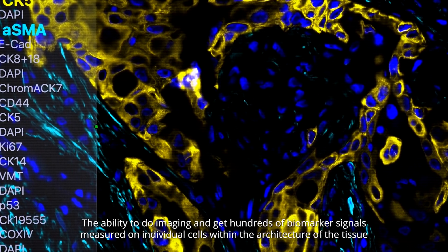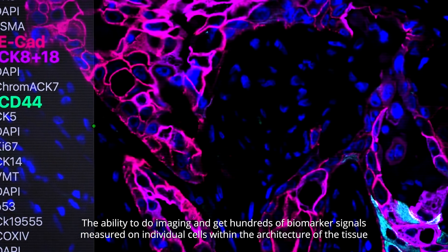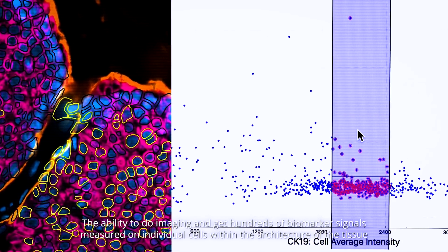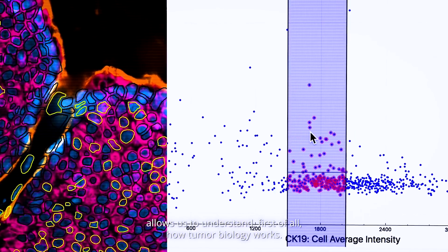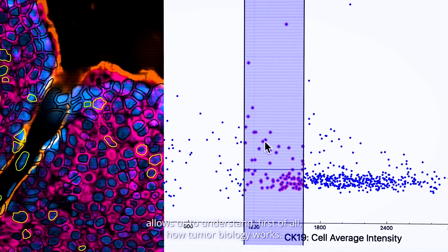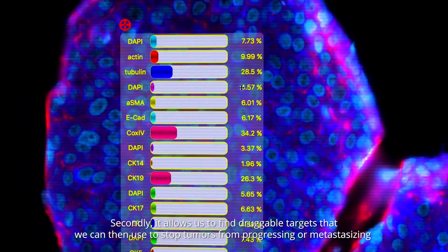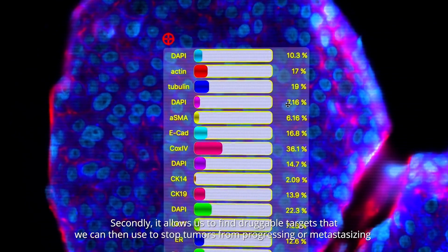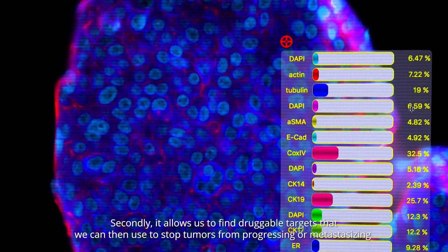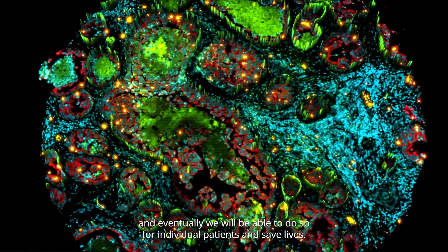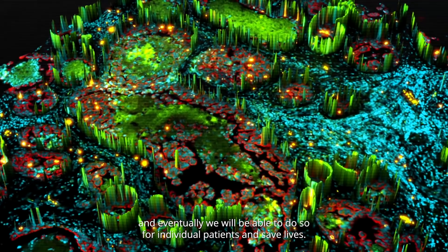The ability to do imaging and get hundreds of biomarker signals measured on individual cells within the architecture of the tissue allows us to understand how tumor biology works. Secondly, it allows us to find druggable targets that we can then use to stop tumors from progressing or metastasizing, and eventually we will be able to do so for individual patients and save lives.